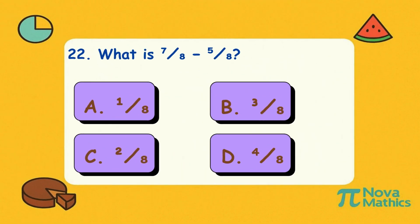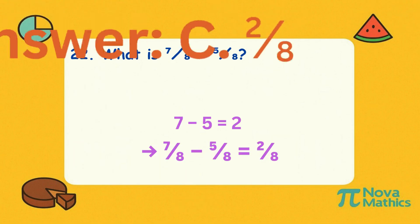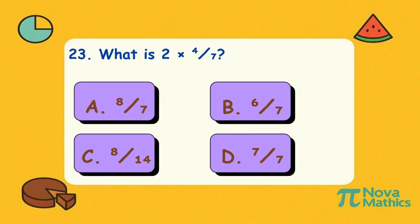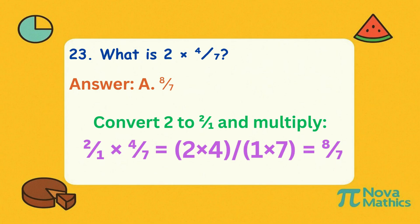Twenty-two. What is seven-eighths minus five-eighths? Seven minus five is two. The bottom stays eight, so two-eighths. Twenty-three. What is two times four-sevenths? Change two to two-over-one. Two times four is eight. One times seven is seven. So eight-sevenths.